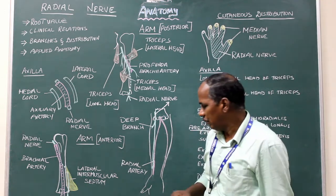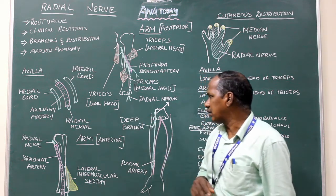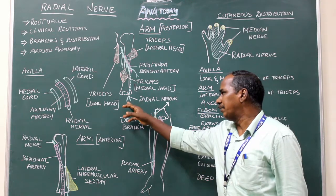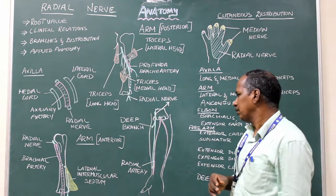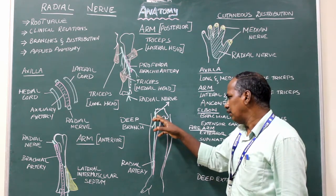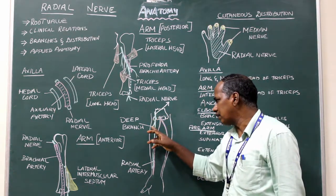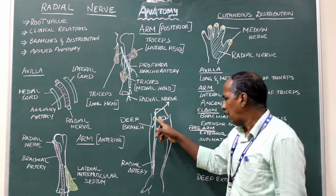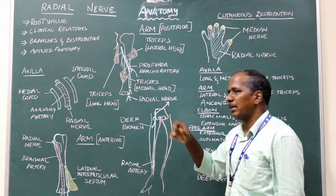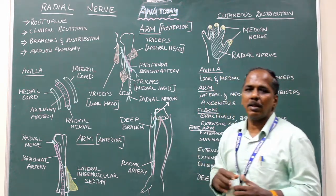At the elbow, it ends by dividing into two branches: the superficial and the deep branch. The bifurcation takes place near the lateral epicondyle. The deep branch is known as the posterior interosseous nerve, and the superficial branch is the sensory branch.